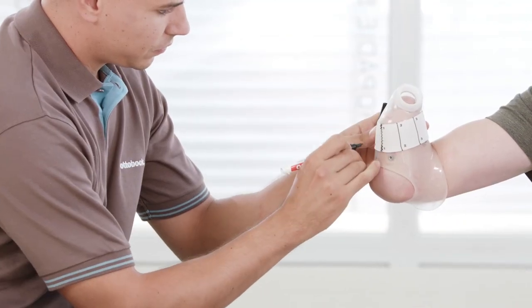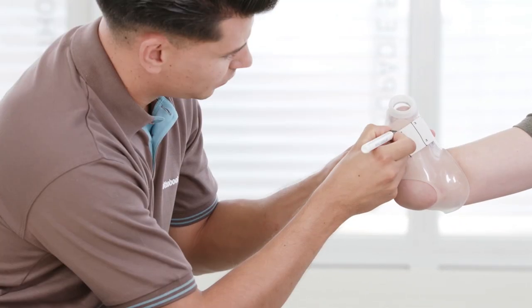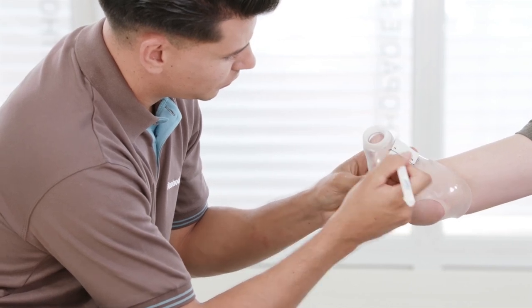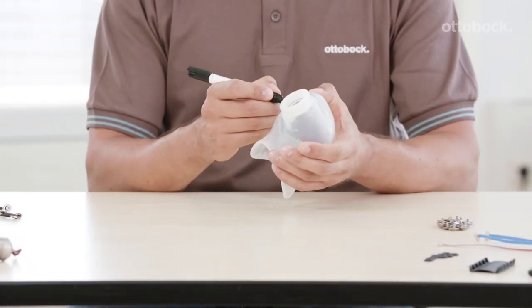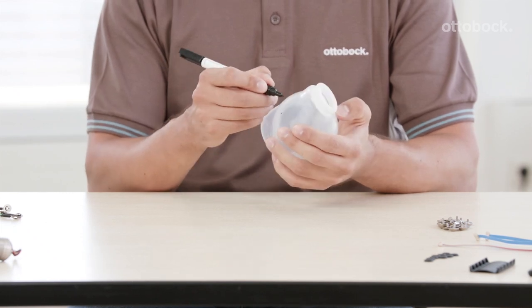Mark each electrode position with a dot and write the electrode numbers 1 to 8 next to them.